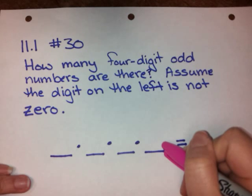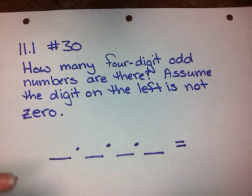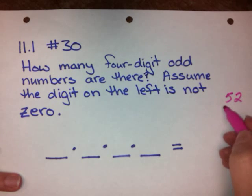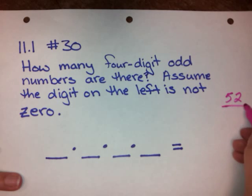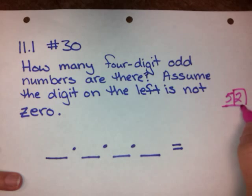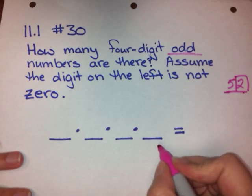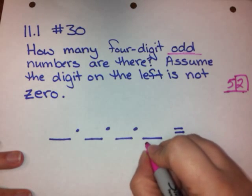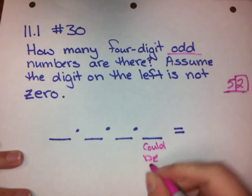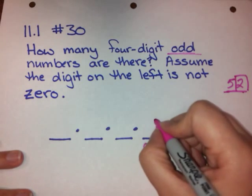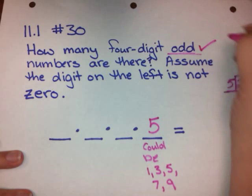Because — just for argument's sake — take the number 52. There's an odd number in 52; that 5 is odd. But 52 is not odd, because the last digit is even, so the number is even. So we want to make sure the last digit is odd. If the last digit is going to be odd, it could be 1, 3, 5, 7, or 9 — so that's 5 choices. That takes care of it being an odd number.